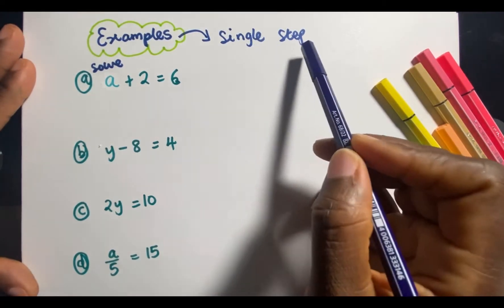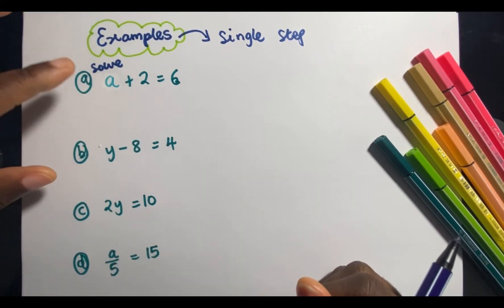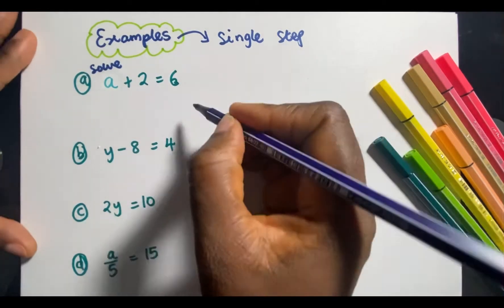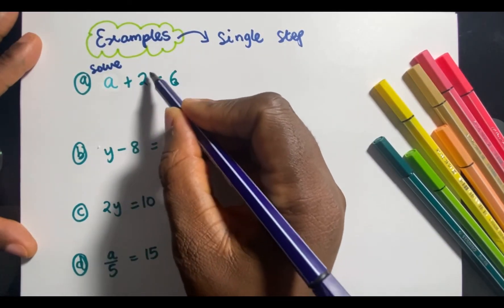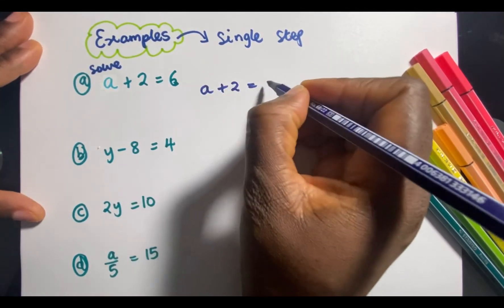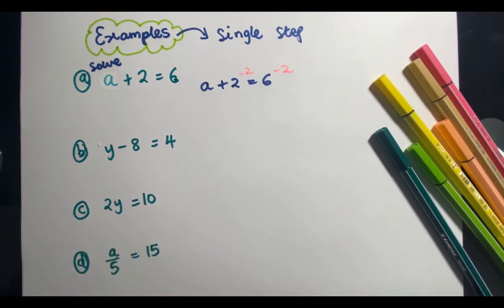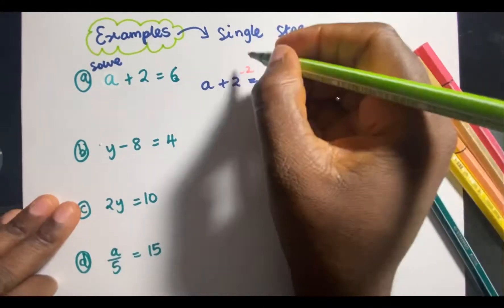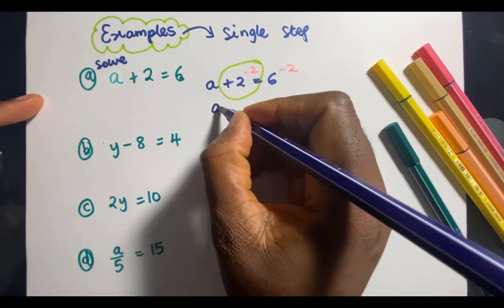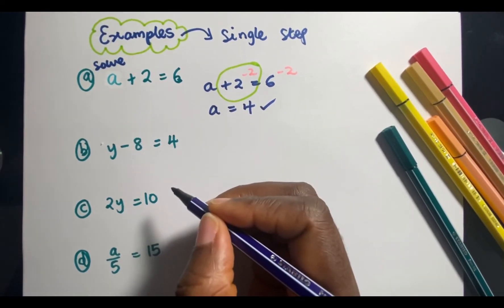Let's jump straight into some examples. We're going to start with some simple single-step examples. Part a says: solve a + 2 = 6. We're looking for a because a is the unknown. There is a 2 being added to a, so using inverse operations, I'm going to subtract 2 from both sides. This cancels the +2, and a is therefore equal to 6 minus 2, which is 4.